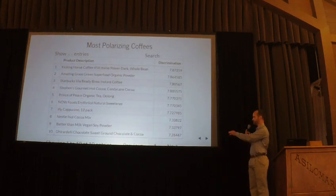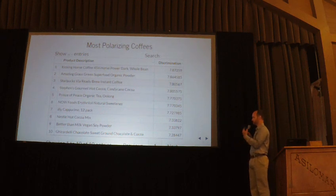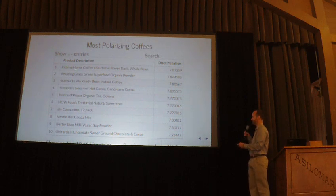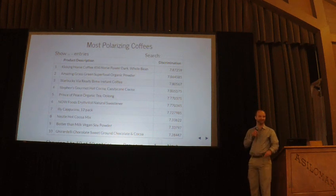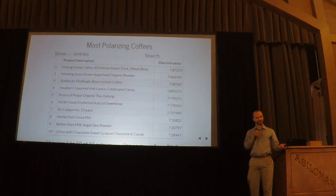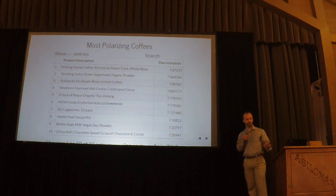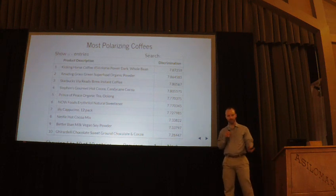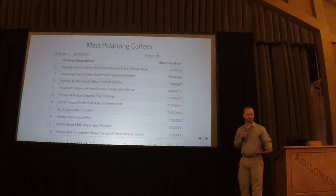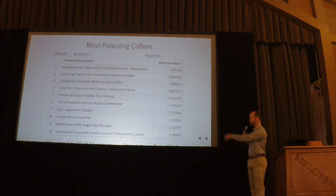Looking at the positive side, which is what Starbucks loaded on, these are some of the other coffees that are really polarizing. The one at the top is actually Kicking Horse Coffee 454 Horsepower Dark Whole Bean — look this up on Amazon, it's interesting. Apparently it's really strong coffee, so some people love it and some people hate it. These models are cool because they produce a ton of information about your data, and if you're in marketing, maybe you should use this.